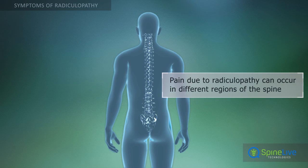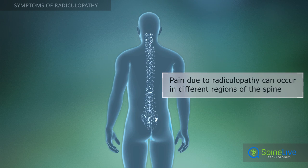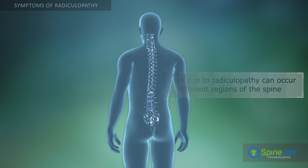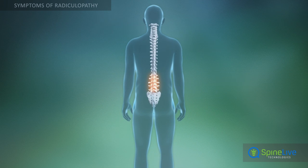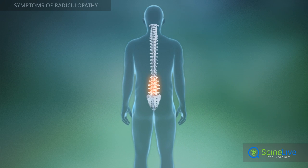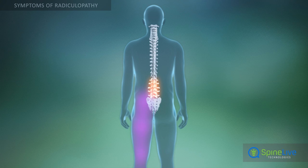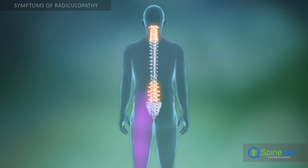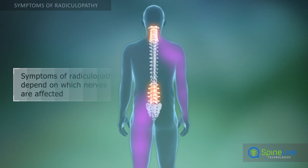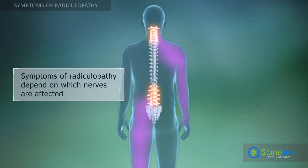The location of pain depends on various factors. Often lumbar radiculopathy pain can extend into the legs, and cervical pain due to radiculopathy can radiate into the arms. This depends on which spinal nerves are compressed. The nerves extend into the extremities from the spine.